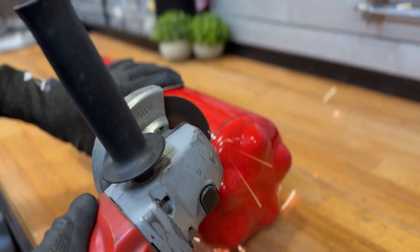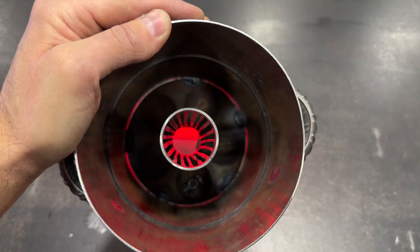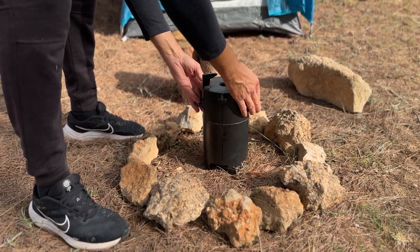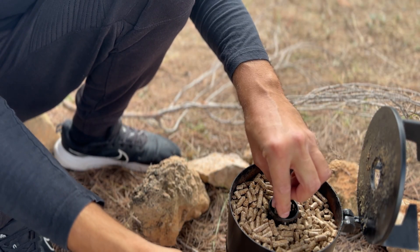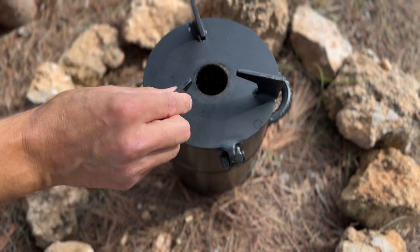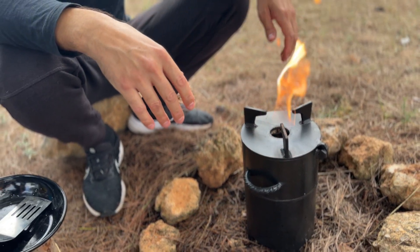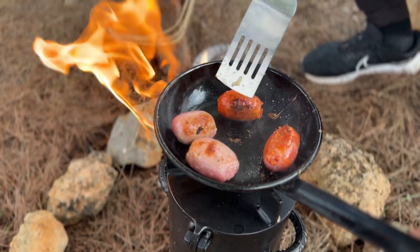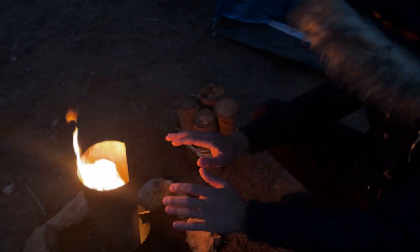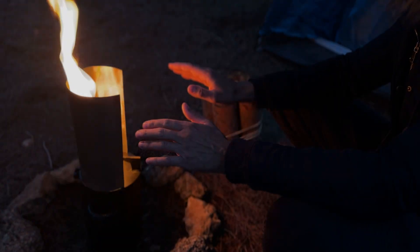We're going to turn this fire extinguisher into an old military stove that we'll also use to cook food in extreme environments. Its highly efficient pyrolytic system will keep us warm for many hours with just one load of pellets or wood. Stay until the end of the video to learn how to make it and see how it works.